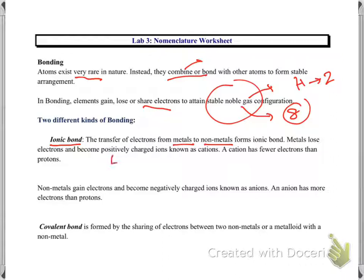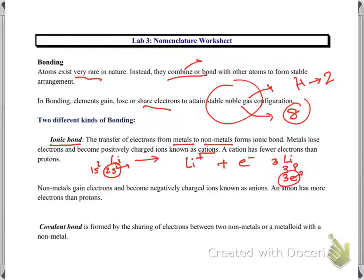For example, let's take lithium. Lithium's electronic configuration is 1s2, 2s1. Lithium loses this electron — we are showing the electron with E. When a metal loses an electron, it becomes positively charged, which is known as a cation. Why does it become positively charged? Because lithium's atomic number is 3, so it has 3 protons and 3 electrons. When it loses one electron, it's left with only 2 electrons, so it now has one more positive charge.